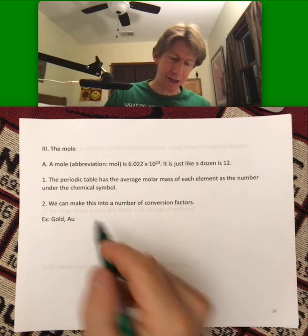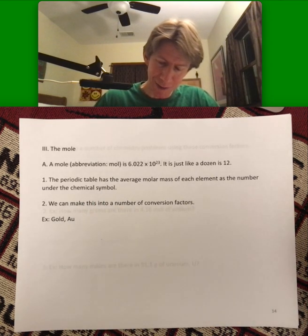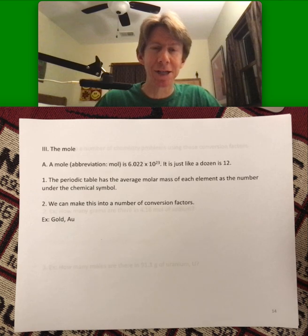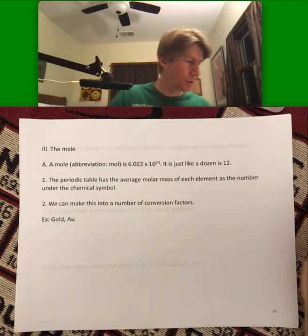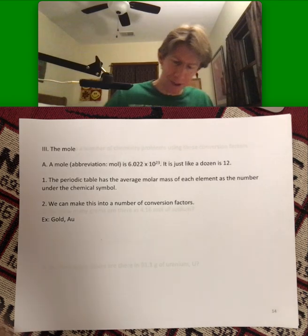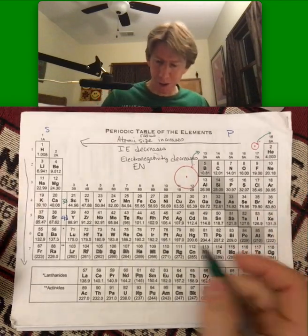The periodic table has the average molar mass of each element as the number under the chemical symbol, as we've discussed. We can make this into a number of conversion factors. And let's do it for gold. I have my periodic table right here.